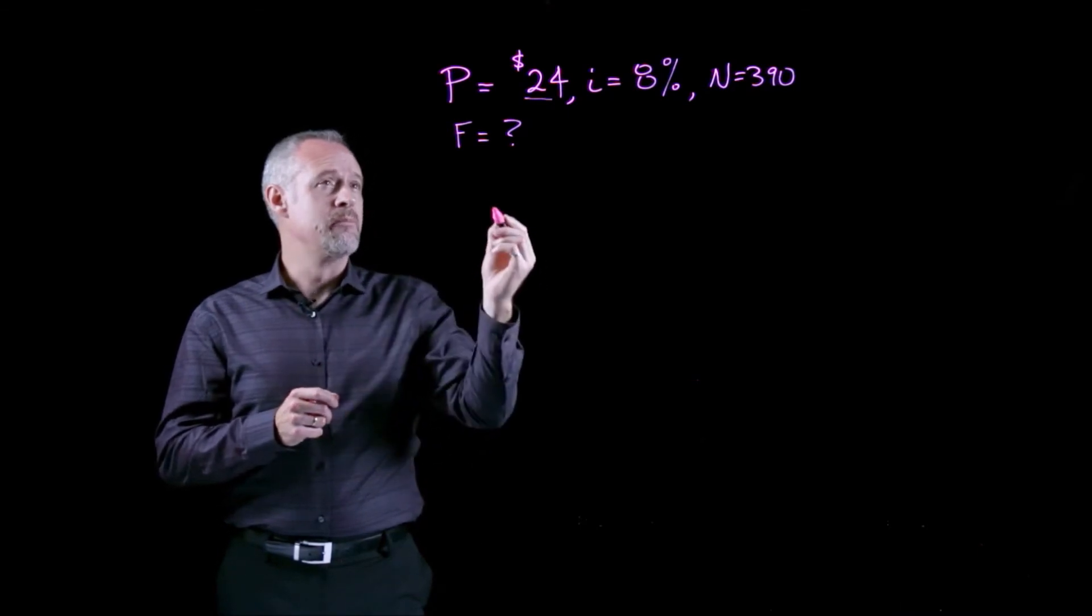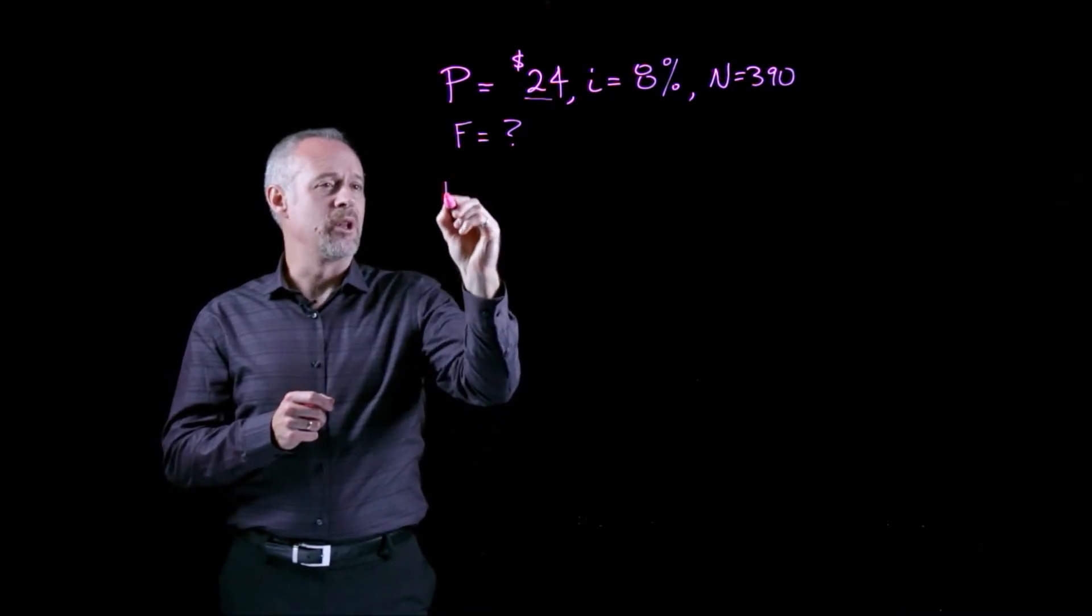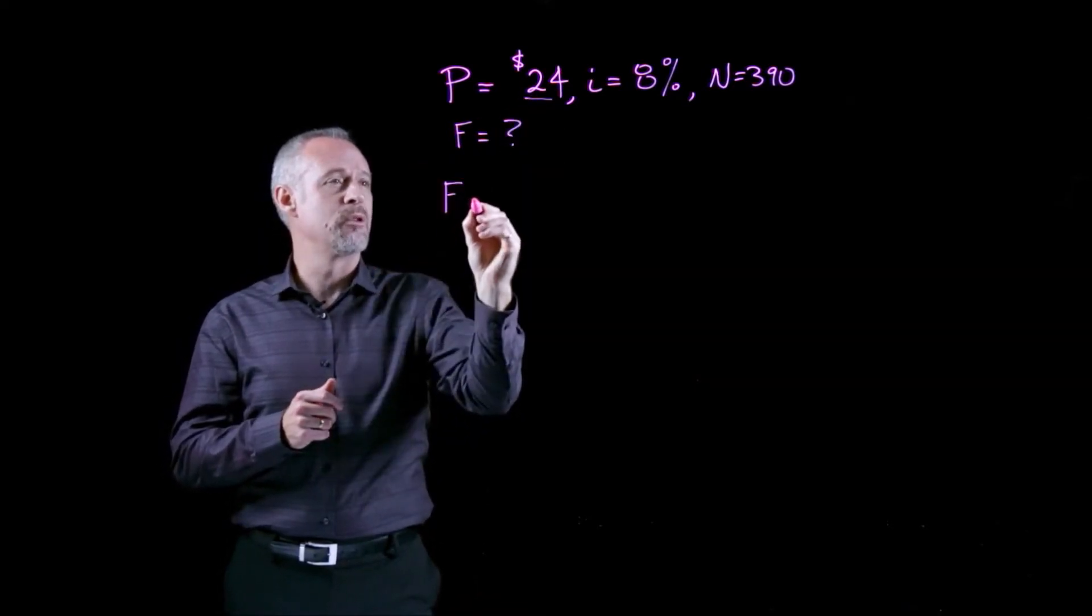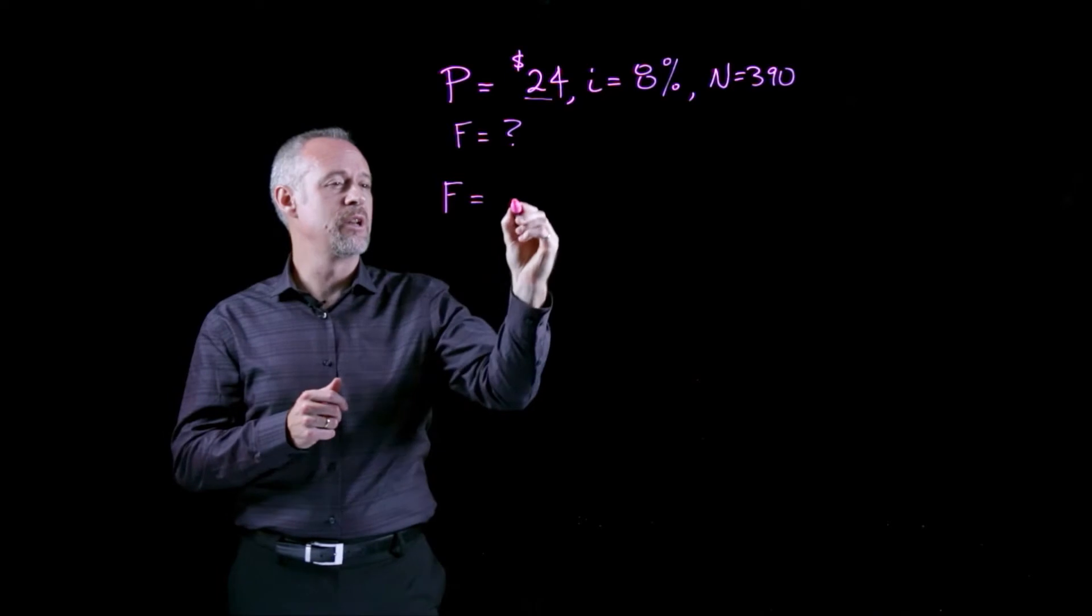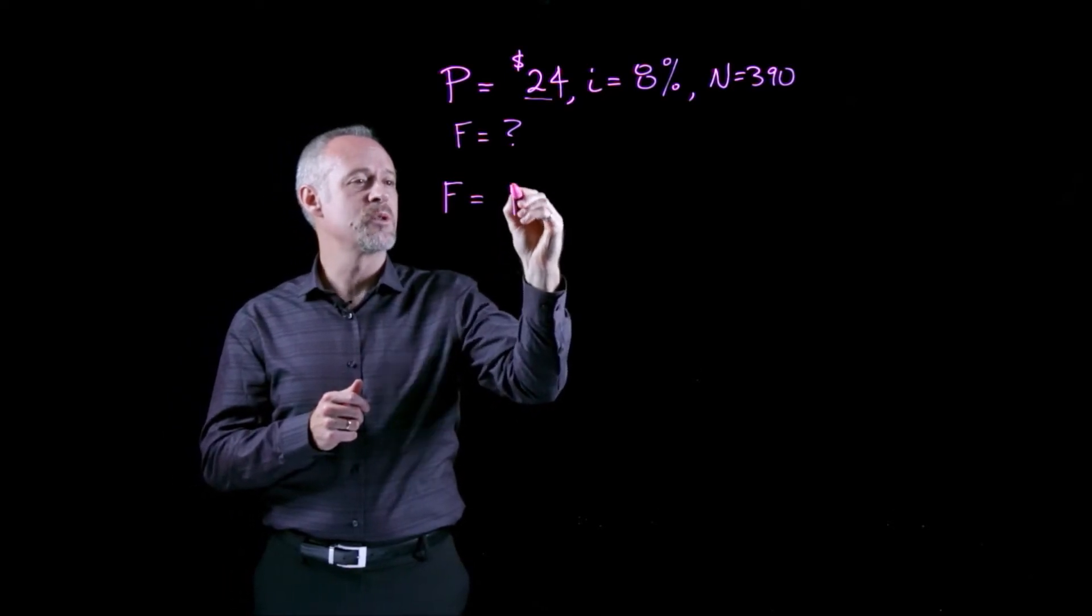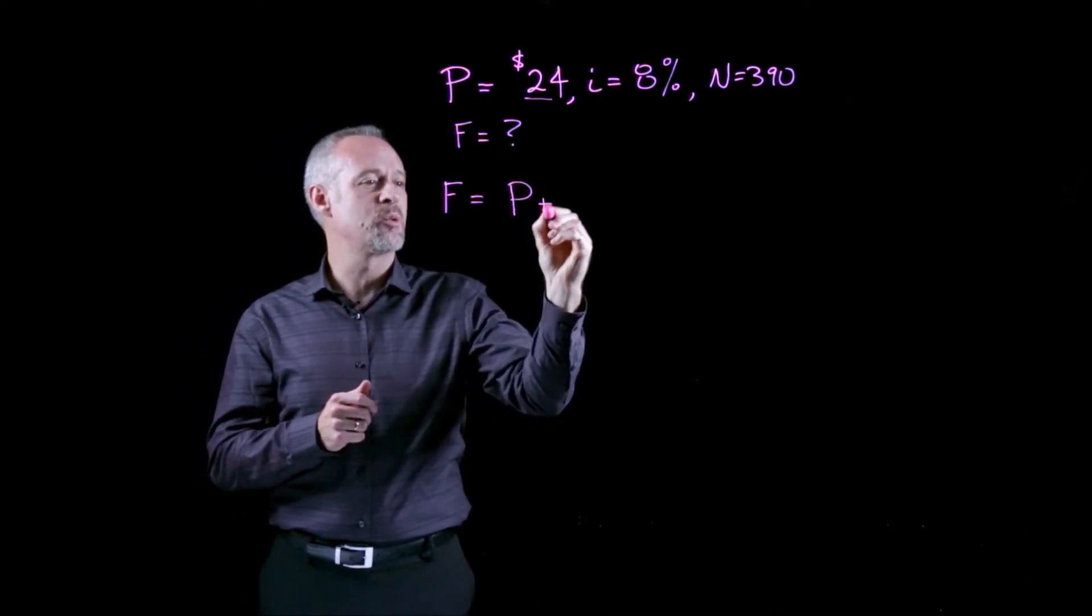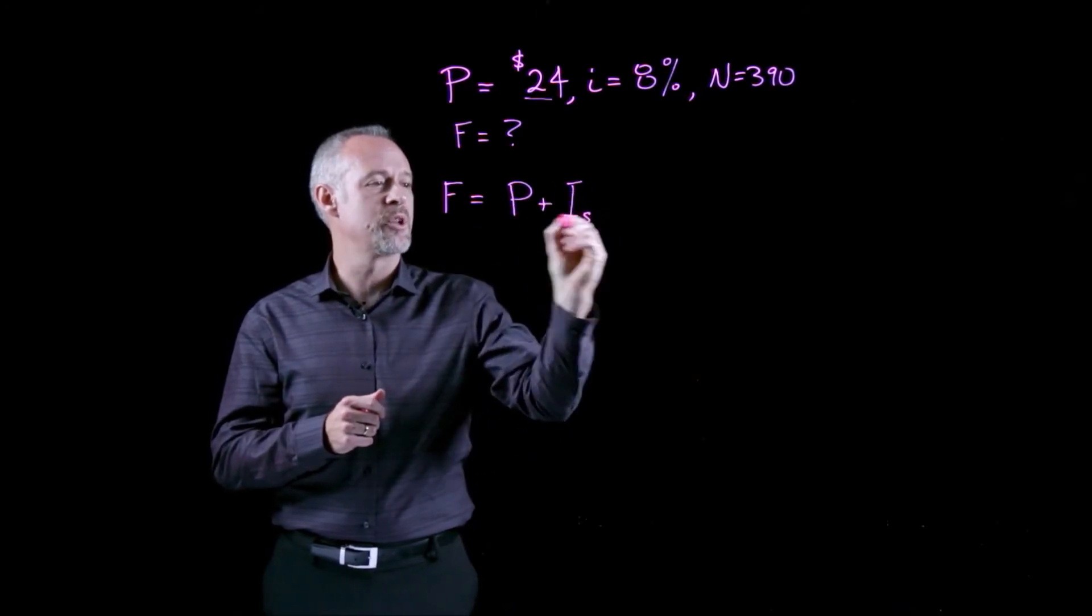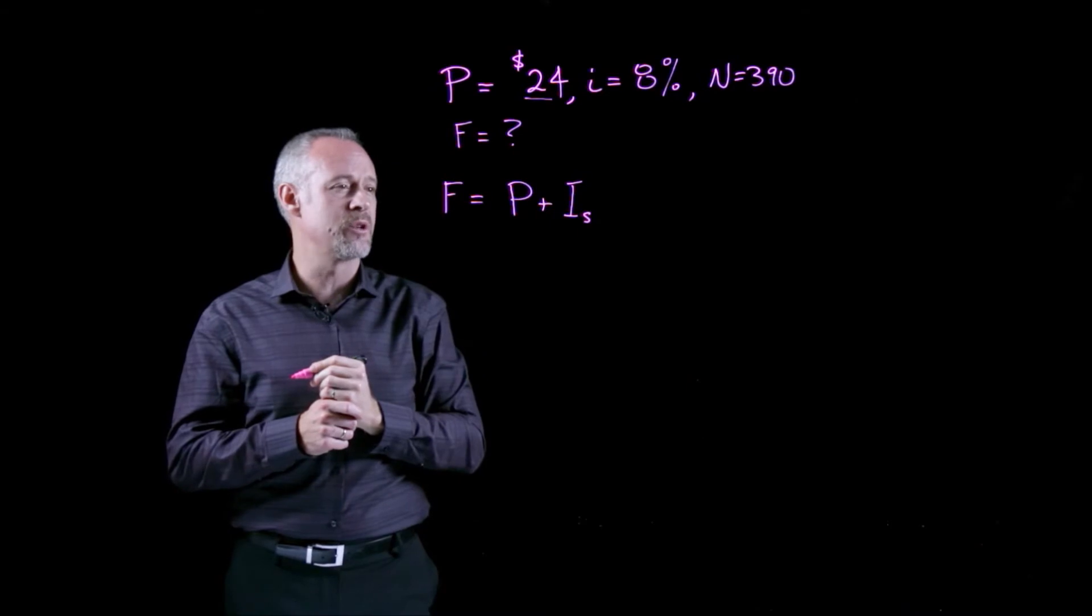So, if we look at the formula for the future value of this $24 investment, really we can start out and say, well, it's whatever the investment was, plus whatever interest was earned. And we'll put a little subscript there to denote simple interest.